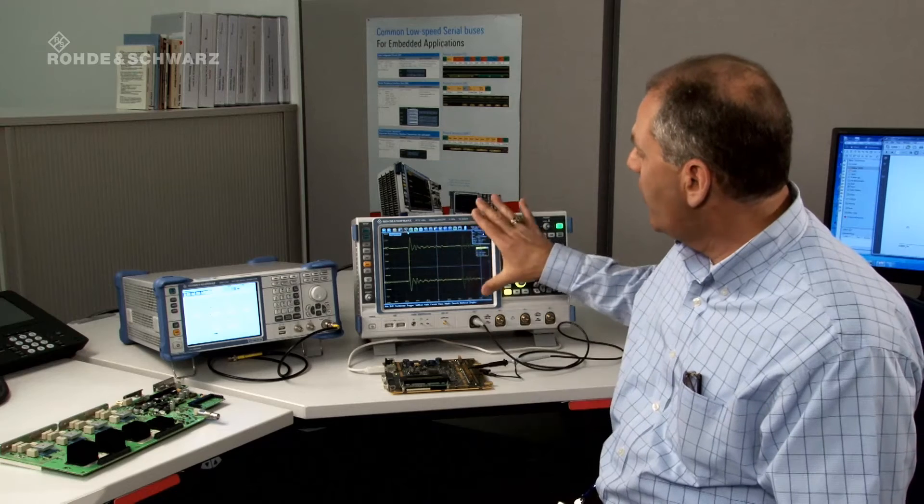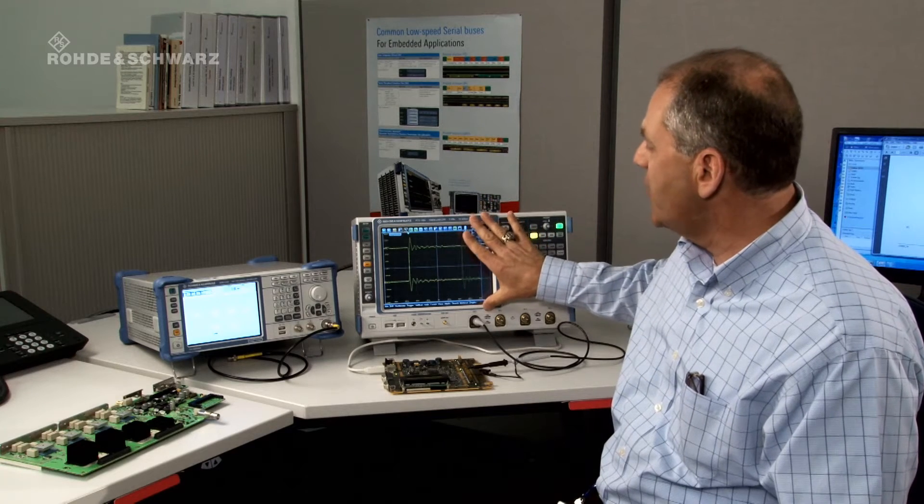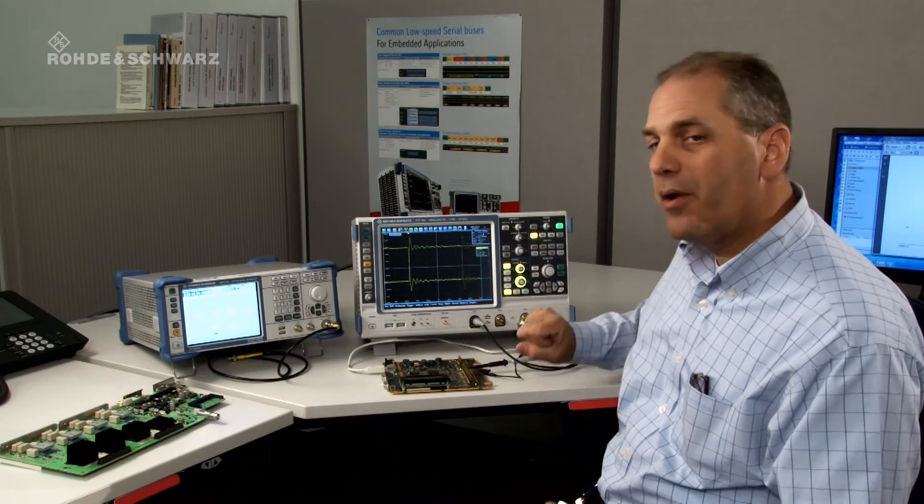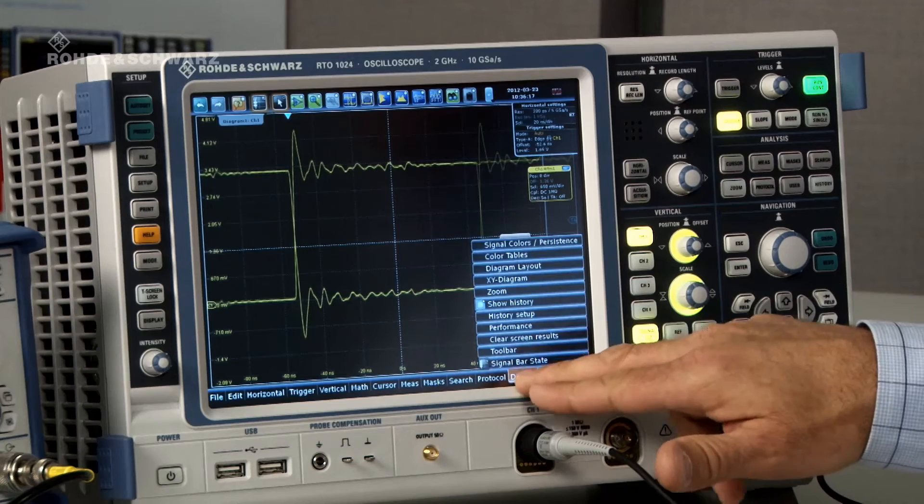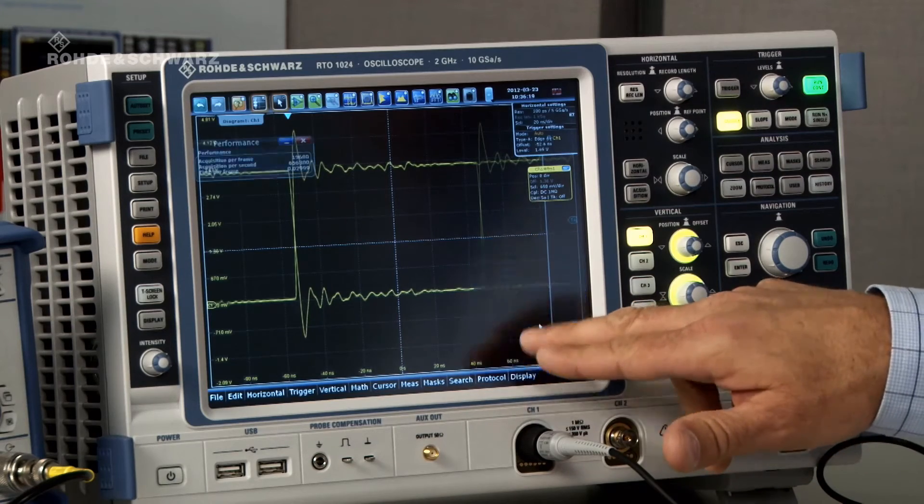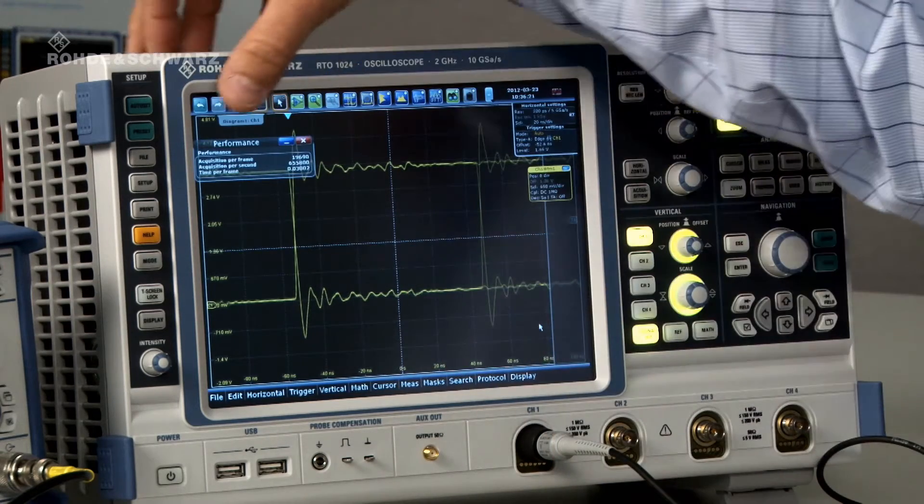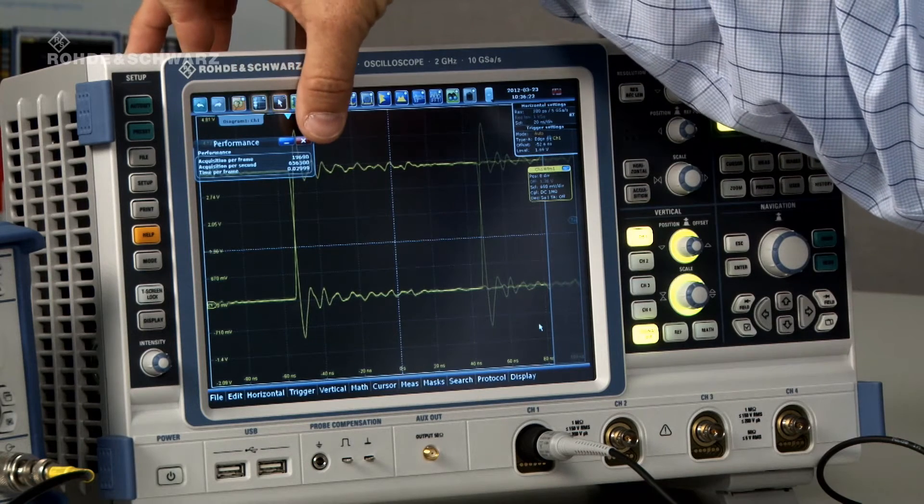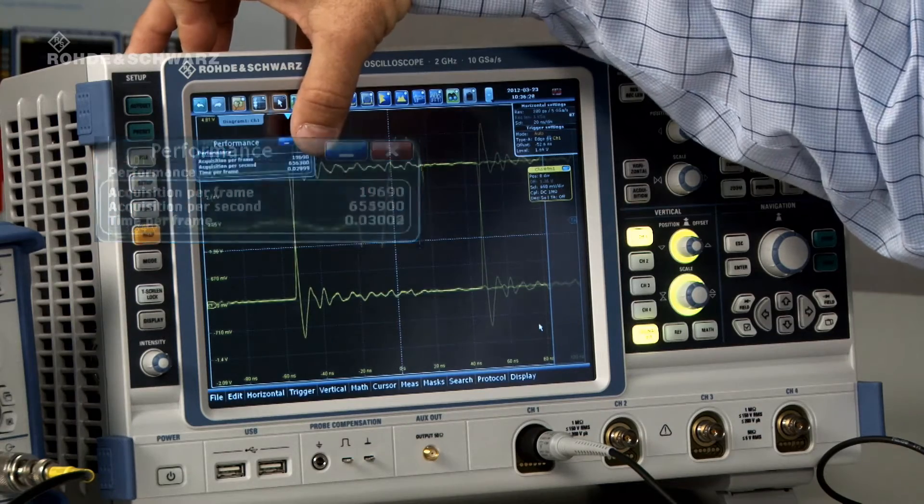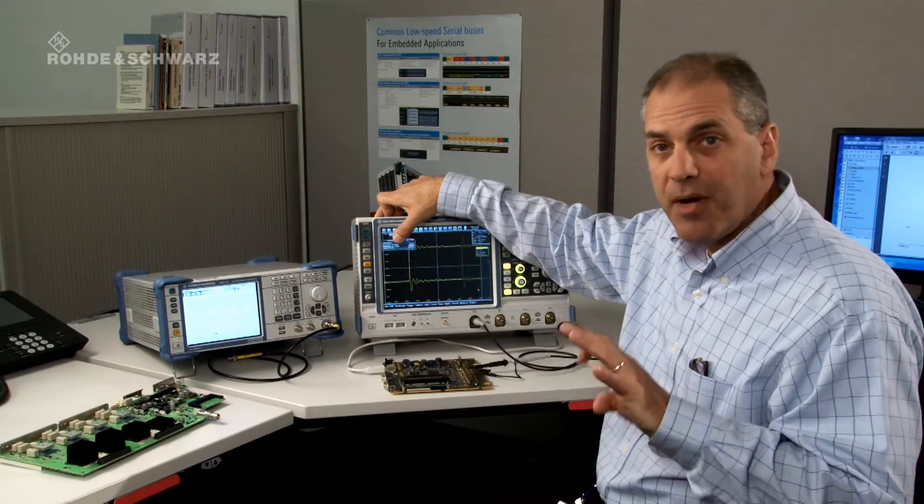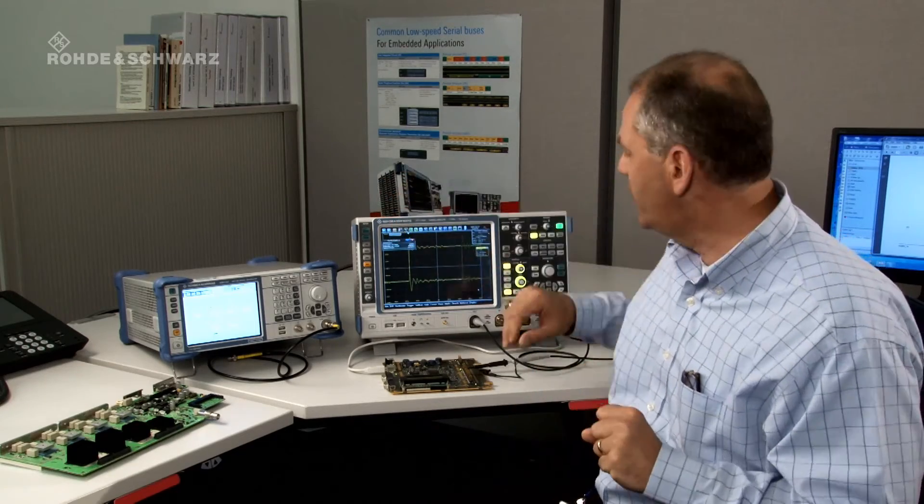And so the first thing I want to do is I want to look at the update rate of the screen. That is how quickly are we acquiring and displaying the data from screen update to screen update. Now to make it convenient we actually have a parameter that displays that update rate and you can see right here the acquisitions per second is showing at 656,000 waveforms per second. It's about a 1.3 microsecond cycle time between acquisitions.